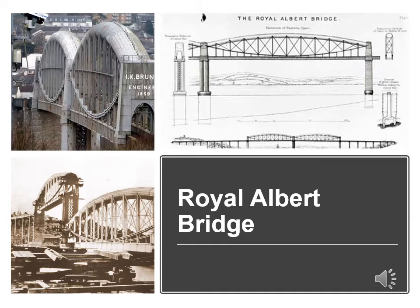The Royal Albert Bridge is a railway bridge spanning the River Tamar in England, between Plymouth in Devon and Saltash in Cornwall. Its unique design consists of 238.7 metre lenticular iron trusses, 30.5 metres above the water, with conventional plate girder approach spans, giving a total length of 666.8 metres. It was opened by Prince Albert in 1859. Brunel died later that year, and his name was placed above the portals at either end of the bridge as a memorial.